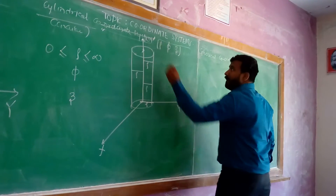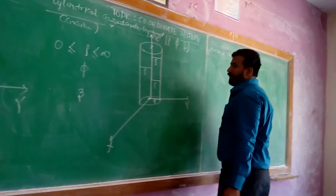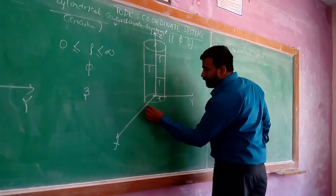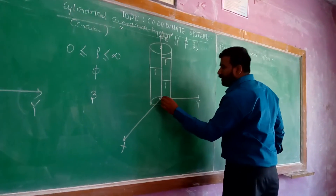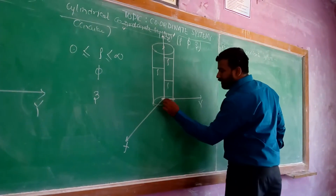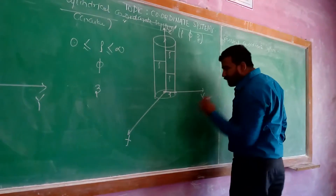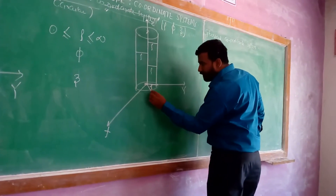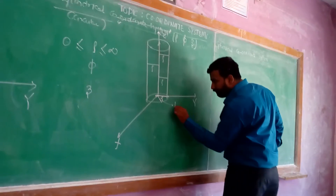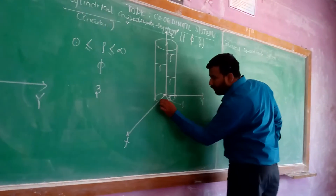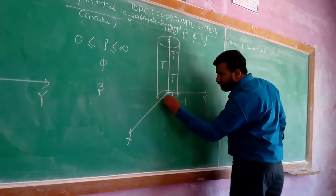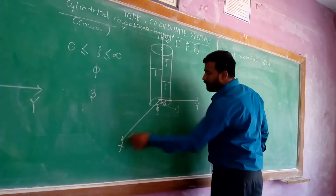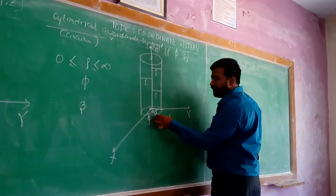Phi is termed as the azimuthal angle, measured from the x axis to the radius of the cylinder. If this is rho and this circle is coming out of the board, then this is also rho, this is also rho. The orientation angle — the azimuthal angle — is measured from the x axis to the rho of the cylinder.